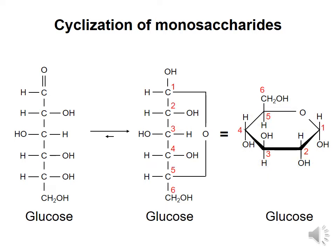To help you see which carbon is which, let's add numbers to the structures. Look at carbons 2, 3, and 4. Notice that the OH groups that were on the right side of the Fischer projection are on the lower side of the Haworth projection, and the OH group that was on the left side of the Fischer projection is on the upper side of the Haworth projection.